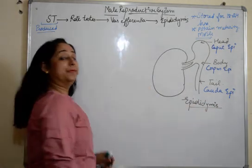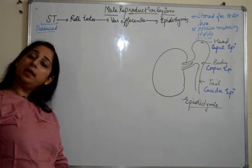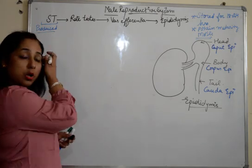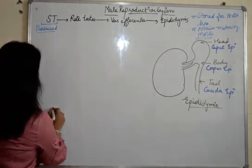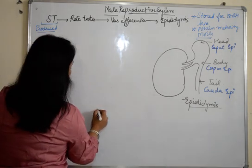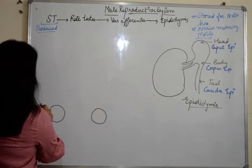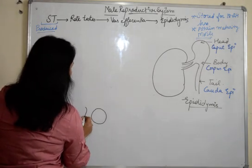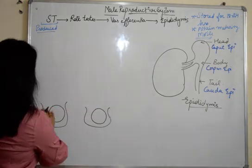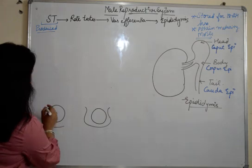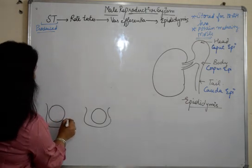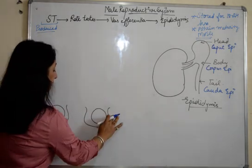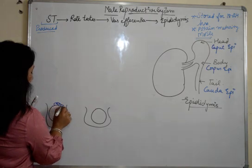Sperms remain in the epididymis for 18 to 24 hours and become mature and motile. Now starting off with the male reproductive system. As we all know, in the male reproductive system we have a main pair of testes which are located in the thin skin of the scrotum. Then we have the epididymis here.